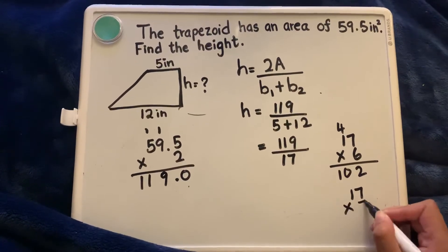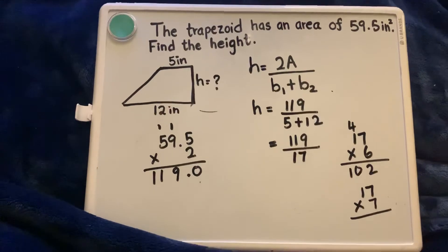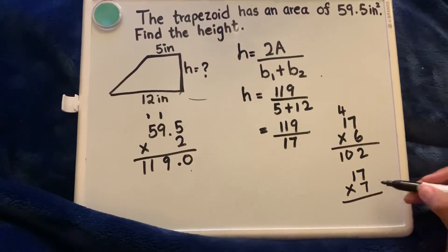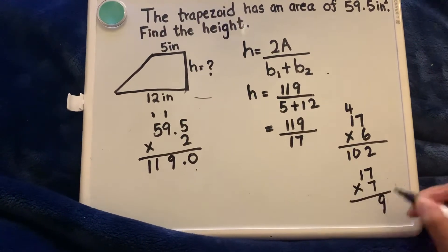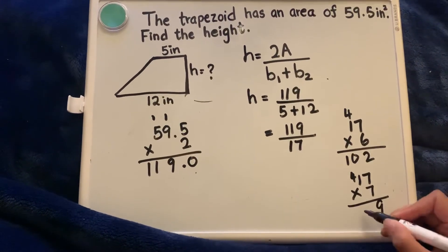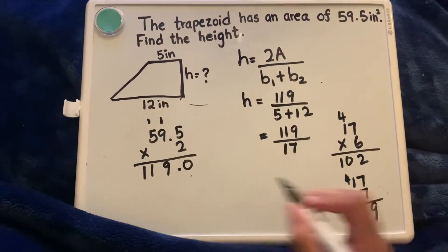17 times 7. This is why we use the guess and check method to see if our answers are correct. 7 times 7 is 49. 7 times 1 is 7 plus 4 is 119. All right, there we go. We got the answer.